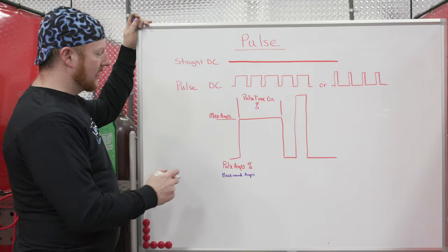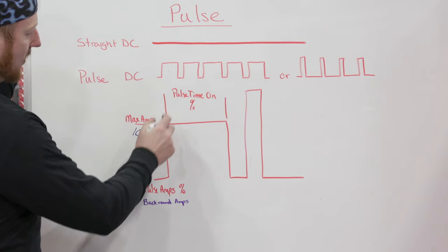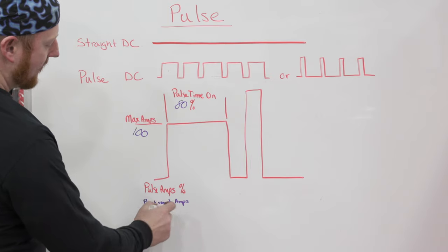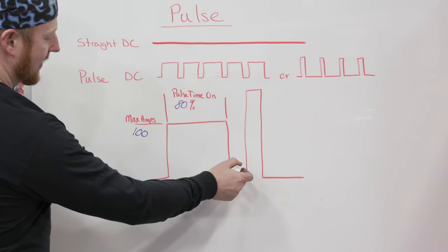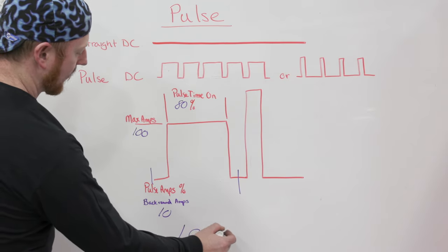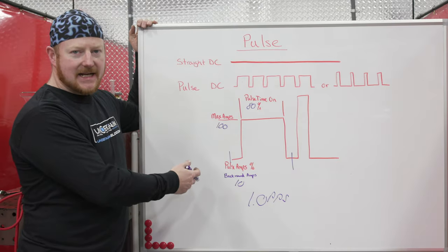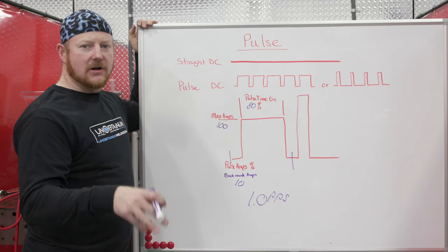So when we come over to the board, here's what that looks like. We set our amps at 100 amps, we set our pulse time on at 80, and we had our background amps at 10. And then this is our one pulse per second. So we're only getting one of these cycles in a second. So now that we have all of our settings input, let's go ahead and get under the hood. We'll strike an arc and I'll show you what it looks like.